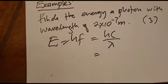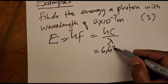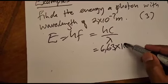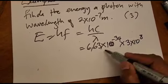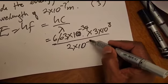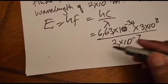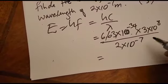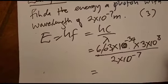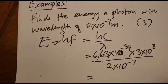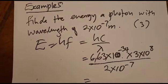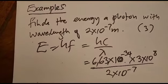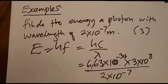Substituting the values: E = (6.63×10⁻³⁴ × 3×10⁸) / (2×10⁻⁷). Using a calculator gives the answer in joules. We will pause here and look at further calculations before moving on to explanations of emission and absorption spectra.